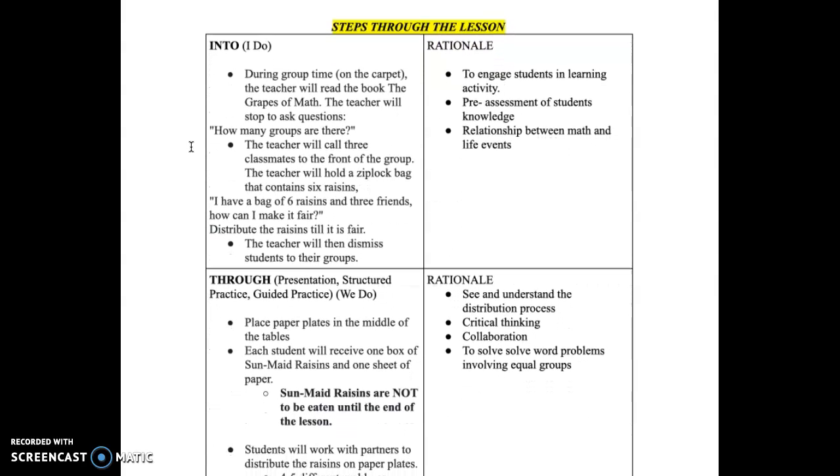So here are the steps throughout the lesson. The steps is the I do, we do, and you do. The I do is the introduction. So I would have my students in the carpet during group time, and I would read the book to them. And as well, when I'm reading the book, I will ask them questions. I will stop to ask them questions, how many groups are there, other questions that will also come into mind while reading the book. The teacher will also call three classmates to the front of the group. This is where the teacher will use a Ziploc bag that contains six raisins. And I would ask their peers, I have a bag of six raisins and three friends. How can I make it fair, and I will distribute the raisins till it is fair. The teacher will then dismiss the students to their groups.